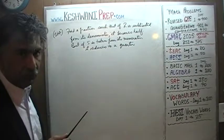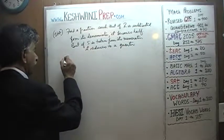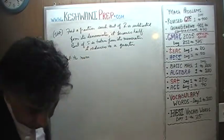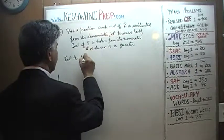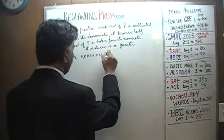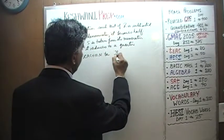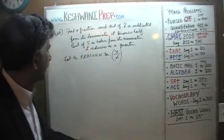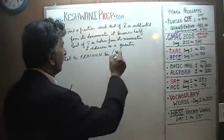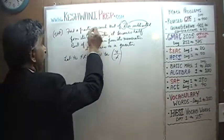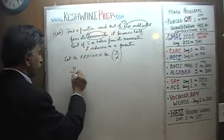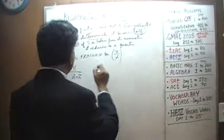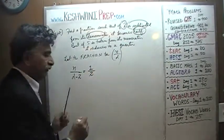Here we go. First we have to define our unknown. Let the fraction we're looking for be n over d — n for the numerator, d for the denominator. We are told that if you subtract 2 from the denominator, so here is our numerator over denominator — if you subtract 2 from the denominator, it becomes half. That's our first equation.